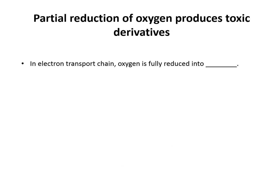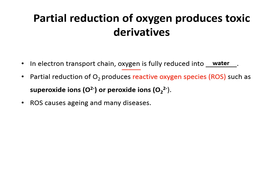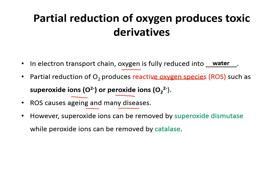Oxygen is the final electron acceptor and by receiving electrons, oxygen is fully reduced into water. However, partial reduction of oxygen can produce reactive oxygen species (ROS), such as superoxide ions and peroxide ions. These can cause aging and many other diseases. The good news is that these ions can be removed by specific enzymes within our cells.